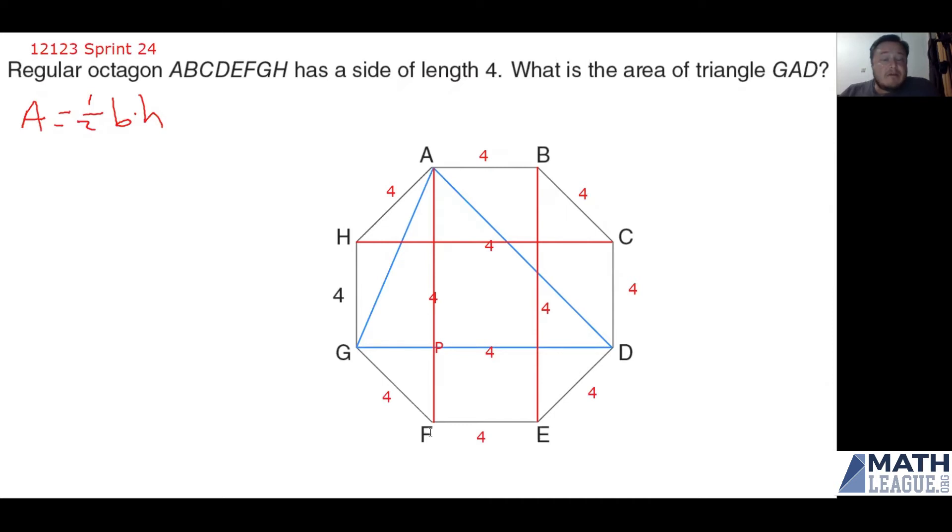Notice that G, P, F is an isosceles right triangle. So GP and PF are going to be the same length because of the symmetry of the octagon. Because of that, we know that this is a 45, 45, 90 degree right triangle. And if you know your results from 45, 45, 90 triangles, you know that if you have the hypotenuse, which in this case is GF, you just have to divide by the square root of 2 to get the length of each leg, GP or PF.